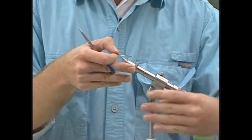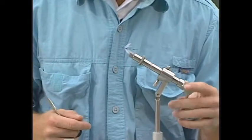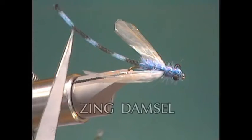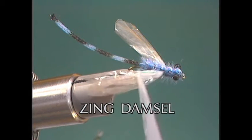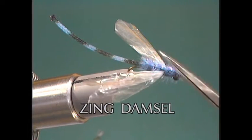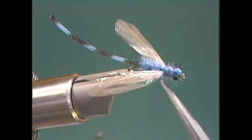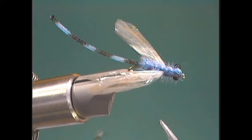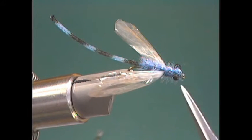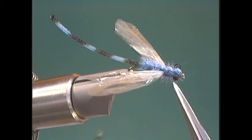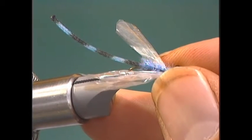From the damsel nymph we go to the adult damsel. This is what I like to call the Zing damsel. The body is damsel body material. The wings are zing wing. I have a strap back here out of blue Zeelon. The thorax area is blue furry foam. Then the eyes are burnt monofilament eyes from Umpqua Feather Merchants, the mini size. So let's tie this little flying beauty.